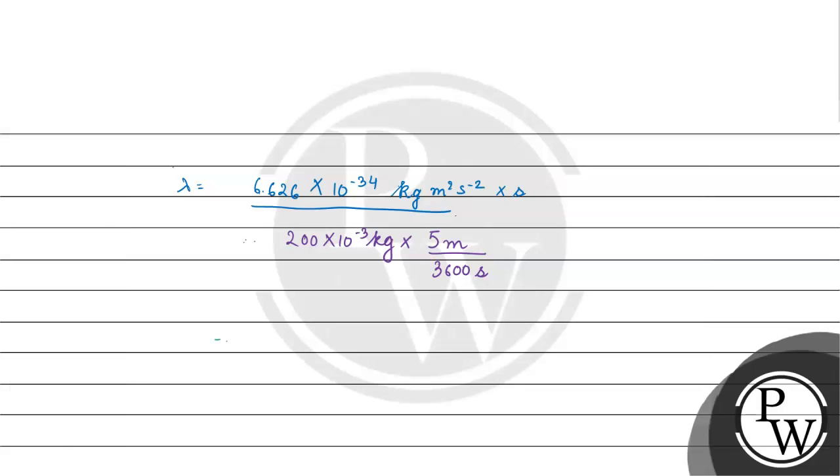Now kilogram cancels with kilogram, meter remains. Second inverse, we have 3600 seconds go up in the numerator, 200 into 10 to the power minus 3 into 5. Per second cancels, then we have 200 into 5, we have 1000, and 10 to the power minus 3 cancels.